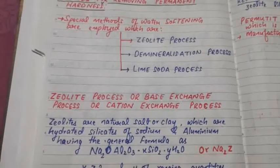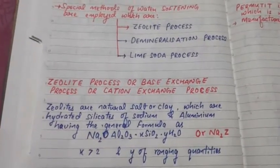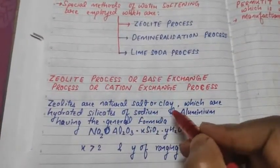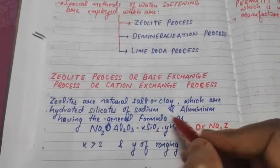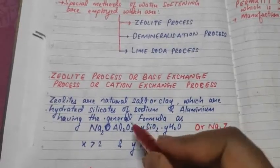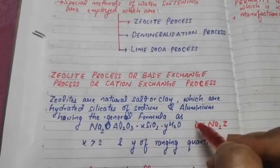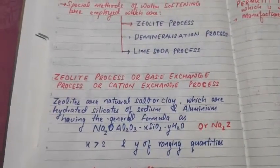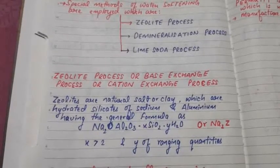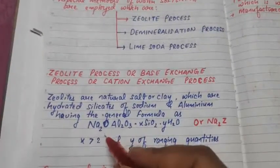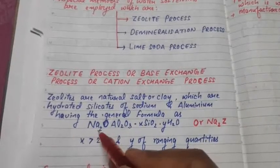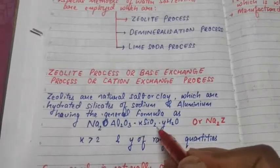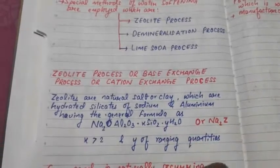Before we study the method in detail, we will understand what zeolites are. Zeolites are natural salts and clays which are hydrated silicates of sodium and aluminum, having the general formula Na₂O·Al₂O₃·xSiO₂·yH₂O.